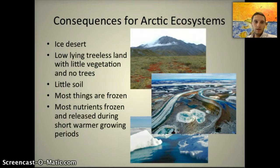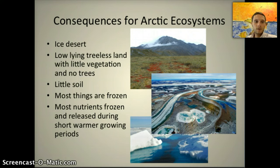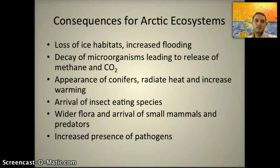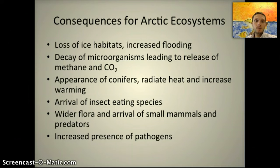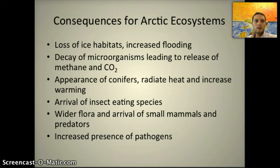This will have major effects on Arctic systems — ice deserts, low-lying tree lands with little vegetation, little soil, where most things are frozen and nutrients are released during shorter, warmer growing periods. What we would expect to see in these ecosystems includes: loss of ice habitats (which we've already started to see), increased flooding, decay of microorganisms leading to the release of additional methane and CO2, appearance of conifers and other organisms that radiate heat and increase warming, arrival of insect-eating species, wider flora, small mammals and predators, and increased presence of pathogens. While some of these don't sound so bad, it could eliminate this Arctic ecosystem, which already has a wide diversity of organisms.